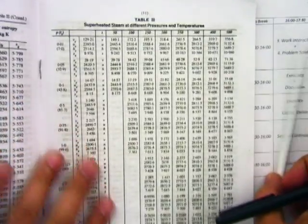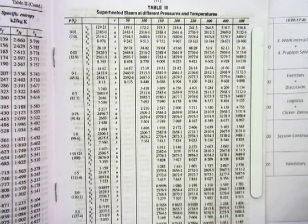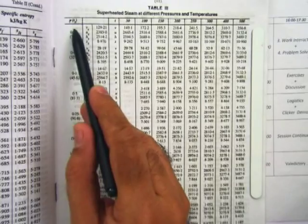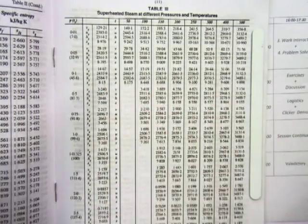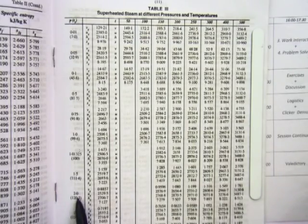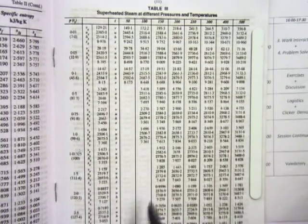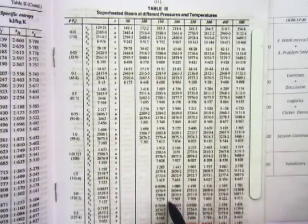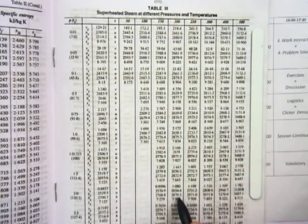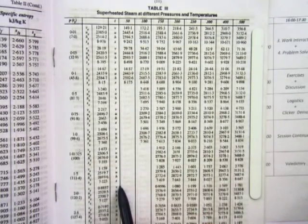Turn to page 11 for Table 3. Unlike Tables 1 and 2 which are one-dimensional, this is a two-dimensional table — properties are listed as a function of both pressure and temperature. For example, at 2 bar and 200 degrees C, you look at the row for 2 bar and the column for 200 degrees C. The four properties listed are specific volume, specific energy, specific enthalpy, and specific entropy.